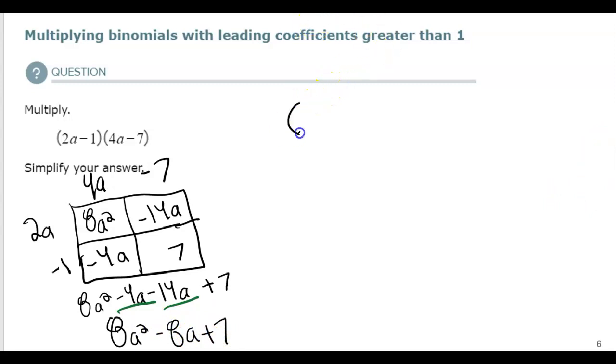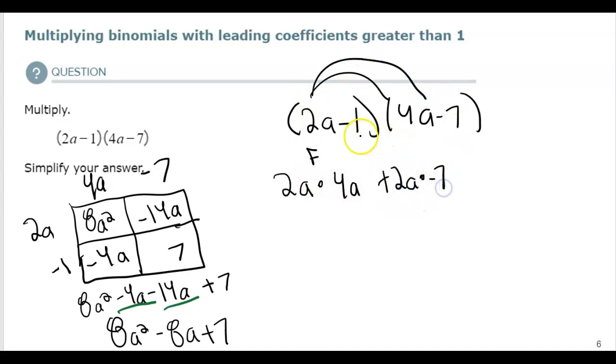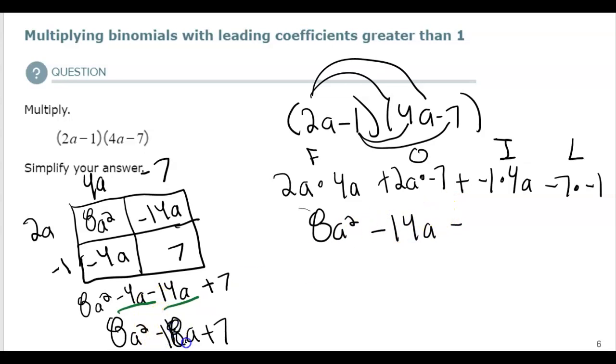If I were to do it with box, it would look something like foil. If I were to use the distribution method, it would look something like foil. First term, so that's where you get the first outer terms, inner, last terms. Now, I'd get the same 8a squared. This should have been a negative 18a over here. And that's what that ends up looking like.